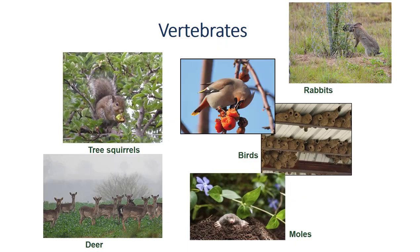Vertebrates are animals with internal skeletons and backbones — they include fish, amphibians, reptiles, birds, and mammals. A vertebrate pest is any native, introduced, domestic, or feral vertebrate species that has a short-term or long-term adverse effect on human health and well-being, destroys food, fiber, or natural resources, or is a general nuisance.